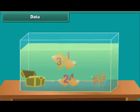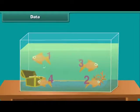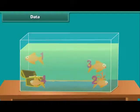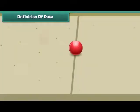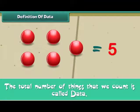Hence, the data is 4. Number of orange fishes is 4. Friends, we now know that the total number of things that we count is called the data.